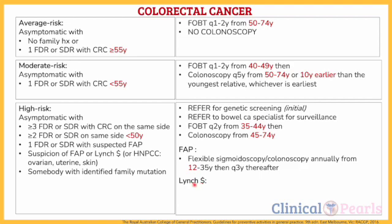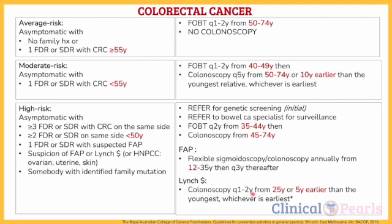If their relative is diagnosed with Lynch syndrome, we do colonoscopy every one to two years from 25 years old, or five years earlier than the youngest relative, whichever is earliest. What's important to remember are the ages that these tests are initiated — as the risk becomes higher, we screen them earlier.